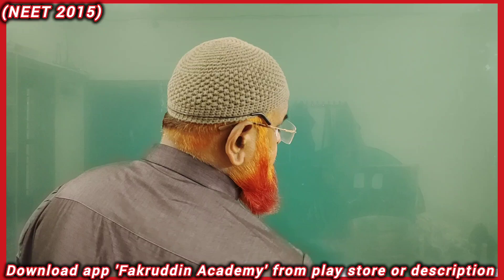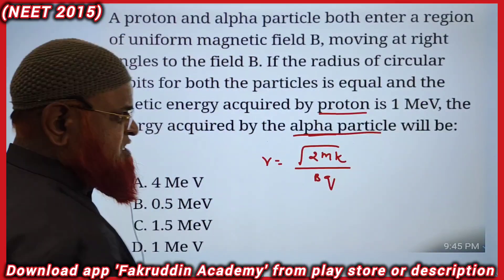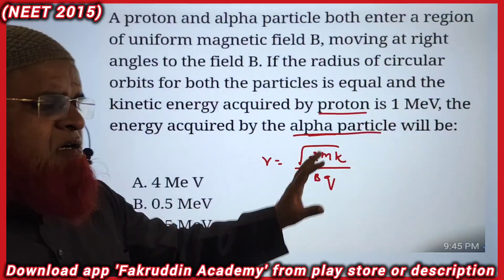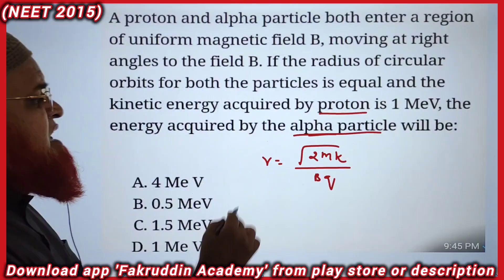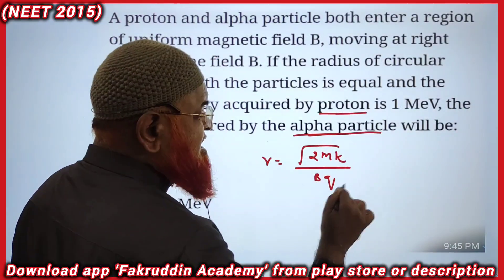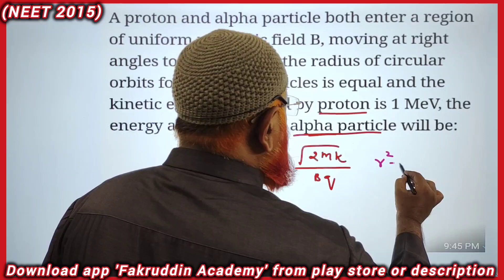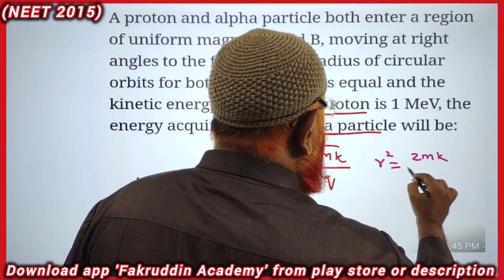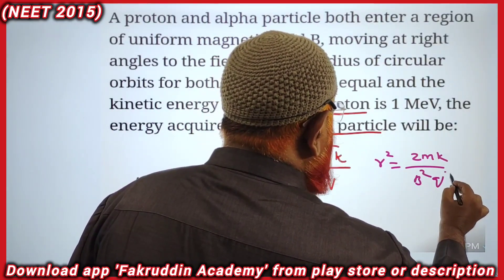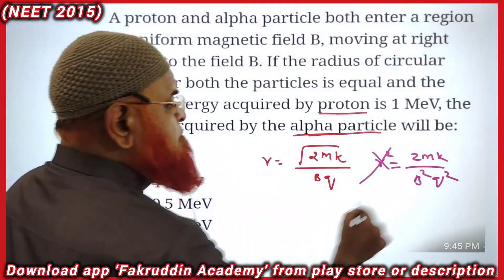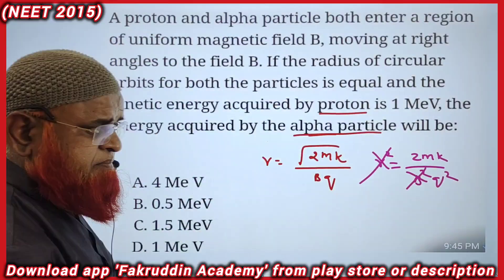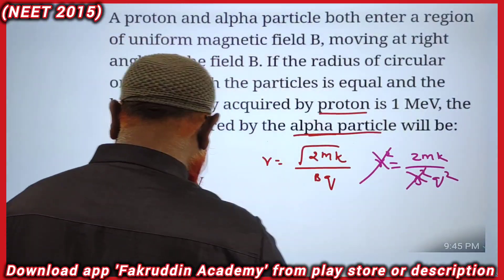Now we can discuss the problem. The same form I got. In the problem, radius is going to be same. Squaring on both sides, r² equals 2mK/B²Q². Here radius is going to be same, magnetic field is going to be same.